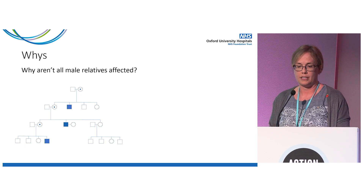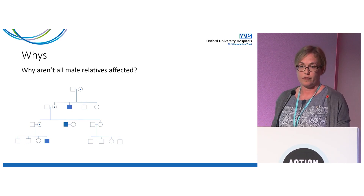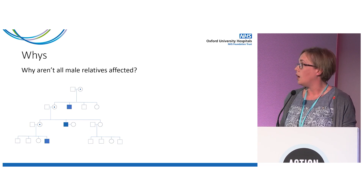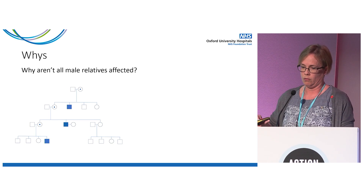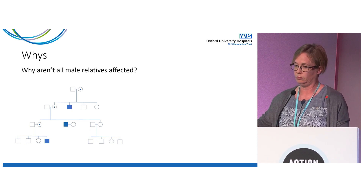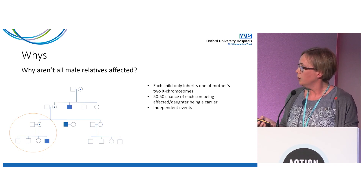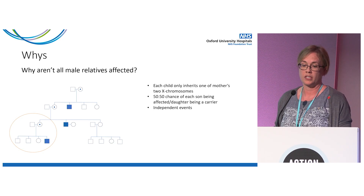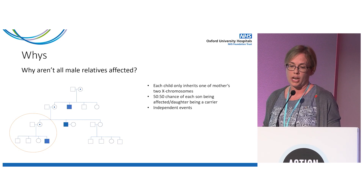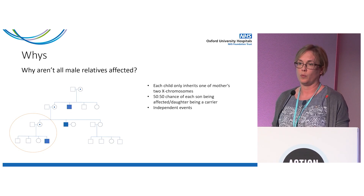Why aren't all male relatives in a family necessarily affected with Duchenne? On this example pedigree, males are shown by squares and females by circles. The colored-in squares are those affected with Duchenne and the dots within the circles show Duchenne carrier females. This lady has one son with Duchenne but two unaffected boys as well, because each child only inherits one of the mother's two X chromosomes. There's a 50-50 chance each time she has a child of passing on the copy with the variant, and each pregnancy is an independent event.